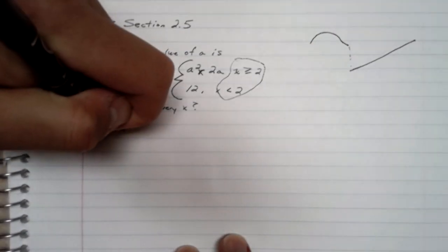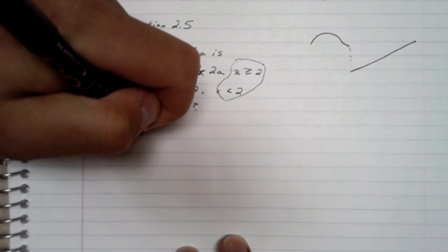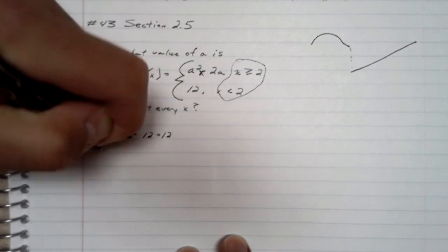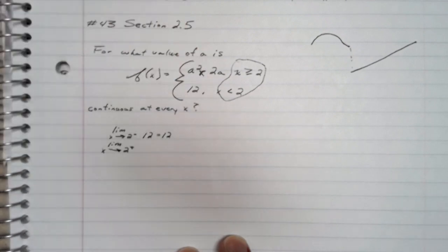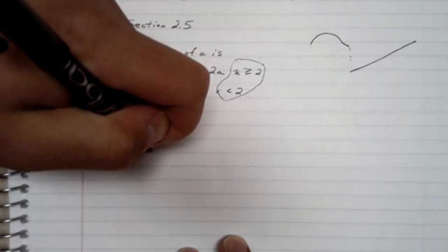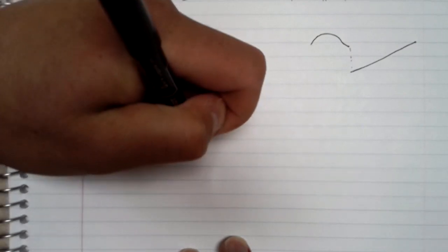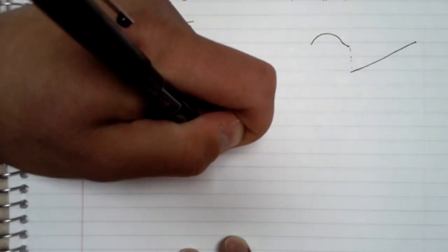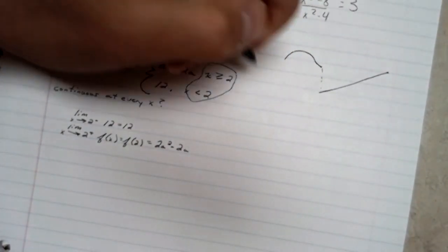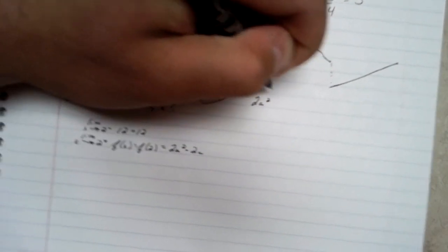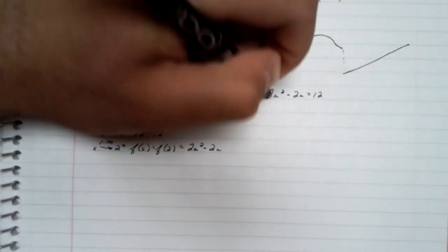So let's go on. The limit as x approaches 2 from the left equals 12. The limit as x approaches 2 from the right of f of x equals 2a squared minus 2a. So in essence, both these limits need to equal each other. So it would be 2a squared minus 2a equals 12.